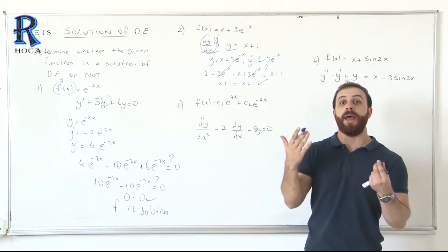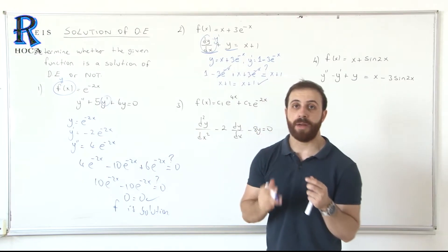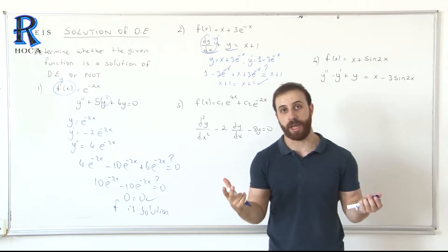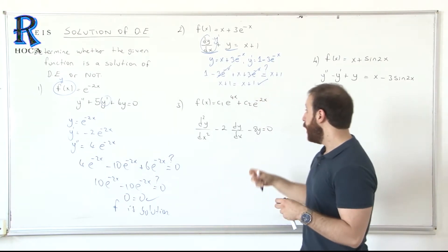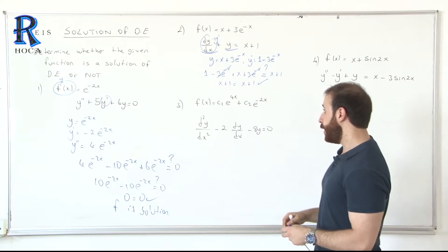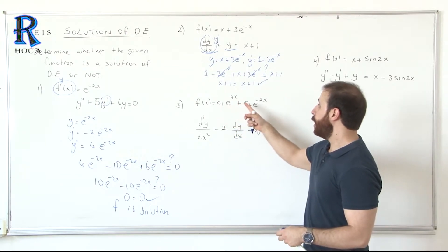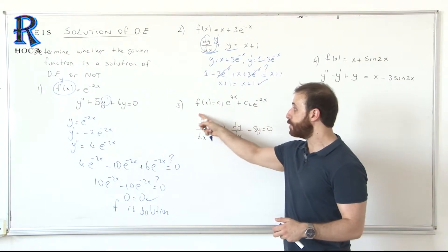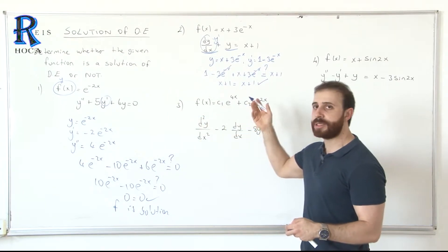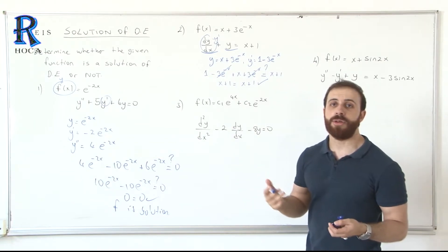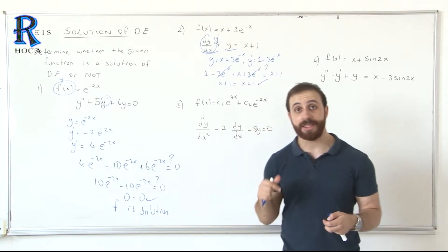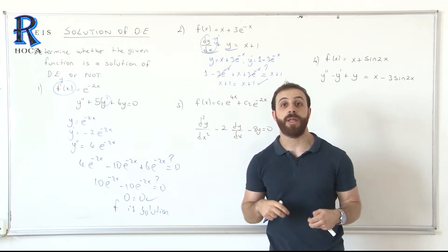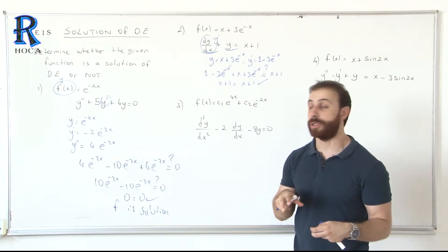You've learned how we check: take the derivative, put it in the differential equation, and check if the left side equals the right side. This is easy. Now another question: y equals C1·e^(4x) plus C2·e^(-2x). We will check if this function is a solution or not. C1 and C2 here are arbitrary constants — any constant. Let's see that this arbitrary constant does not affect the solution.